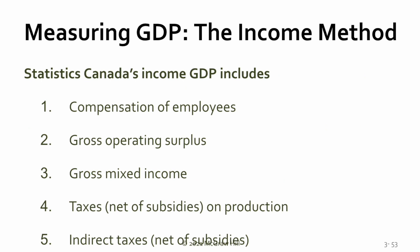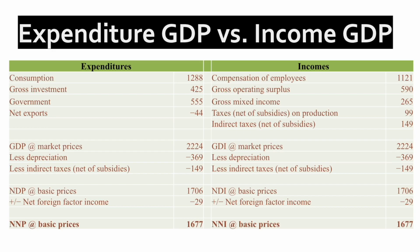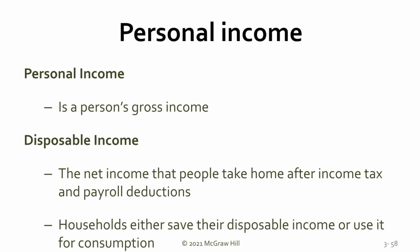We can also look at measuring gross domestic product from an income perspective. From an income perspective, we're doing exactly the same thing and should get the same answer as the expenditure method — we're just looking at the income side. So we're looking at compensation for employees, gross operating surpluses for business, gross mixed income for business, taxes net of subsidies on production, and indirect taxes. If we do that, we should get exactly the same answer whether we use the expenditure method or the income method. Personal income is your gross income, while disposable income is the net income that people take home after income tax and payroll deductions.